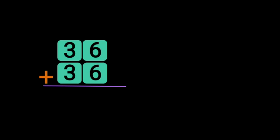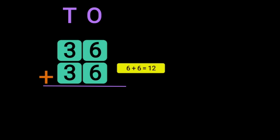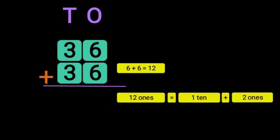Let us move on to the next example. We have 36 plus 36. Write down the 1's place and the 10's place. Begin the addition of the digits in the 1's place: 6 plus 6 will give you 12. So we have 12 1's. 12 1's can be regrouped as 1 ten plus 2 ones. Write down the 2 in the 1's place and carry over the 1 to the 10's place.